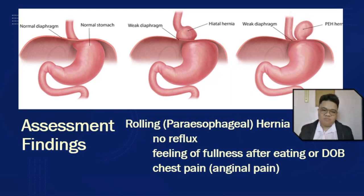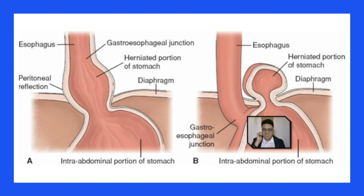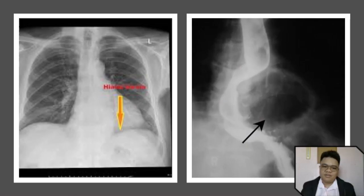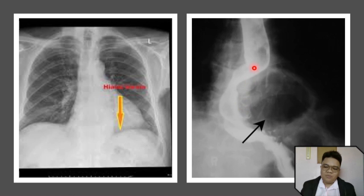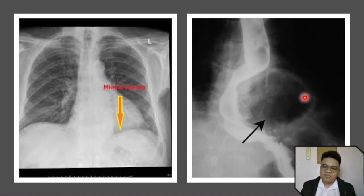Now for management. For diagnostic studies, we have x-ray and barium swallow with fluoroscopy. As you can see on the x-ray on the left, there is a space indicating that an air-filled organ may have elevated above the diaphragm. On the right, you are seeing a barium swallow taken after an x-ray. This shows the part of the stomach which has protruded beside the esophagus.